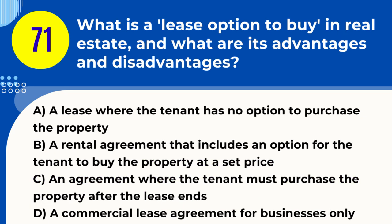Question 71. What is a lease option to buy in real estate, and what are its advantages and disadvantages? A. A lease where the tenant has no option to purchase the property. B. A rental agreement that includes an option for the tenant to buy the property at a set price. C. An agreement where the tenant must purchase the property after the lease ends. D. A commercial lease agreement for businesses only. Answer: B. Explanation. A lease option to buy gives the tenant the option to purchase the property at a predetermined price during or at the end of the lease term. Advantages include the ability to test the property before buying and a locked-in purchase price. Disadvantages include potential loss of option money if not exercised and market fluctuations.